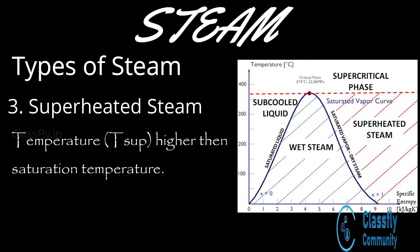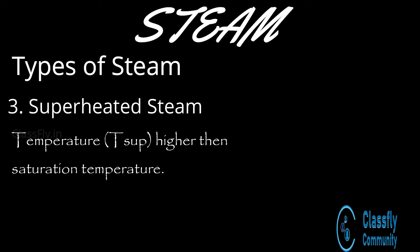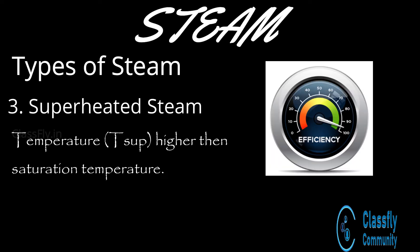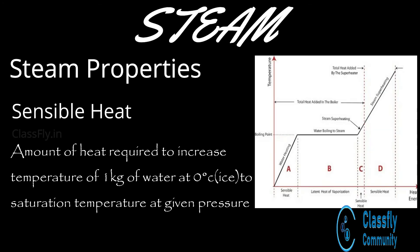Dry saturated steam exists completely in its pure vapor form at the saturation temperature for a given pressure. Next, superheated steam is steam which is heated to a temperature much higher than its saturation temperature. The temperature at which superheated steam starts to form is known as the superheated temperature. The advantages of superheated steam are that it contains a large amount of heat energy and hence has a high capacity to do work, and its thermal efficiency is very high.